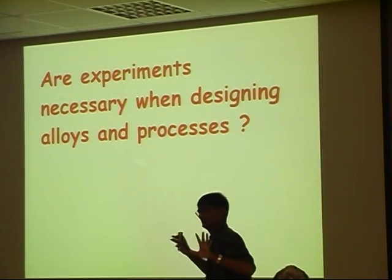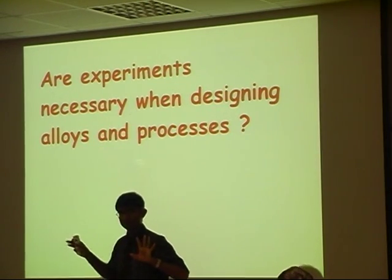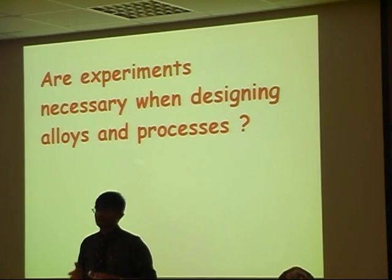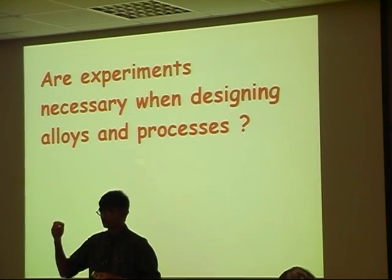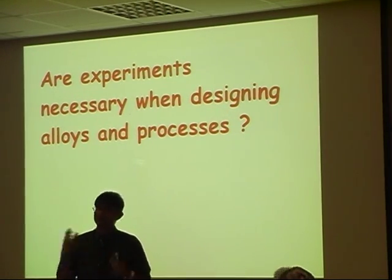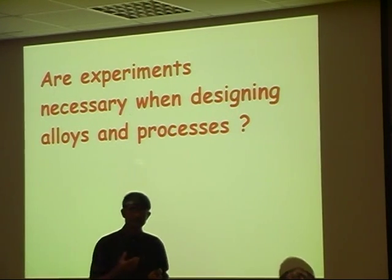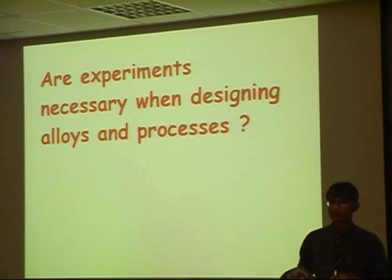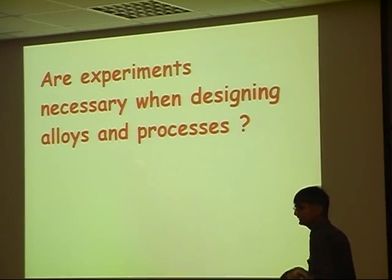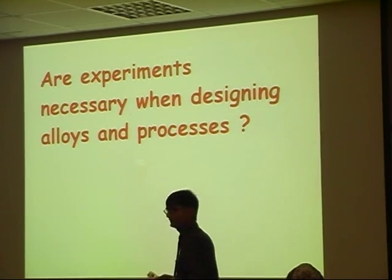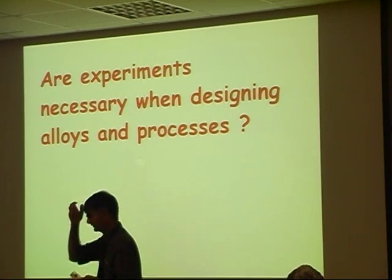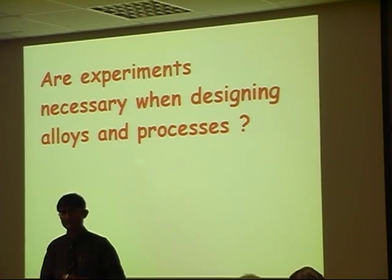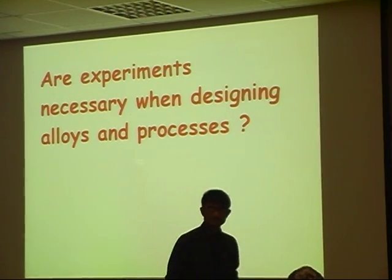Now, we have described every possible type of model. We've described first principles, electron theory, thermodynamics, kinetics, and so forth. Even mechanical properties. Because we can deal with the most complicated mechanical properties by creating neural network models. So the question arises, do we need to do experiments anymore? So let's try and answer that question. I would say, yes and no.